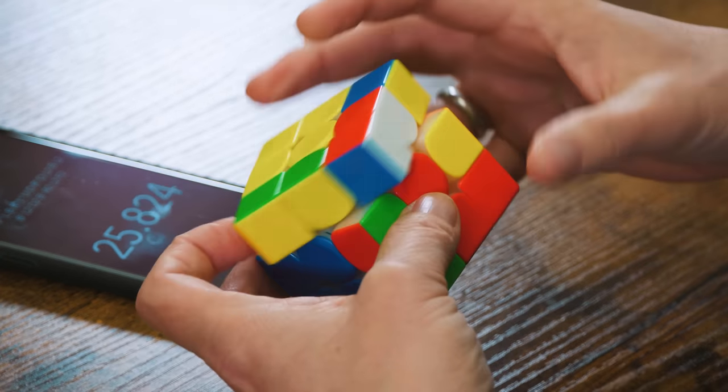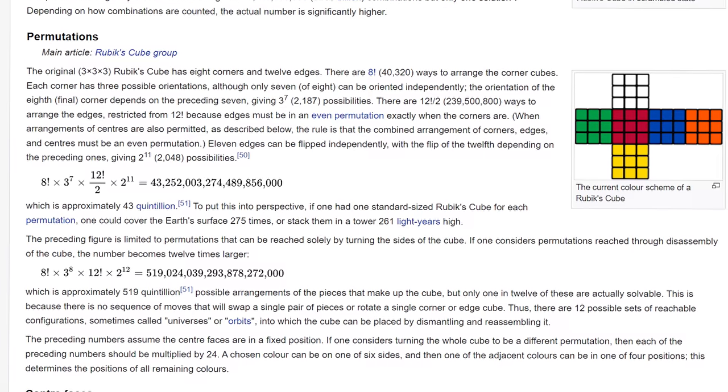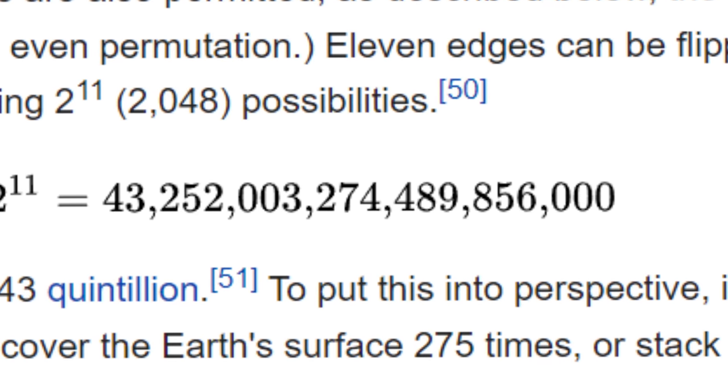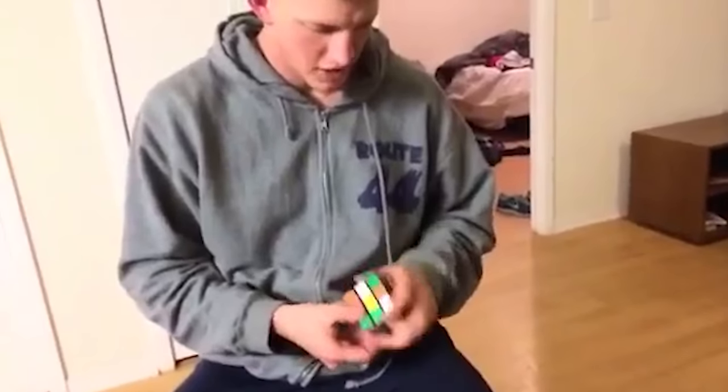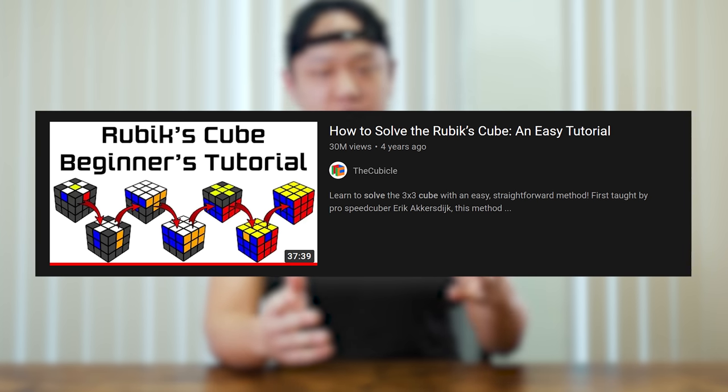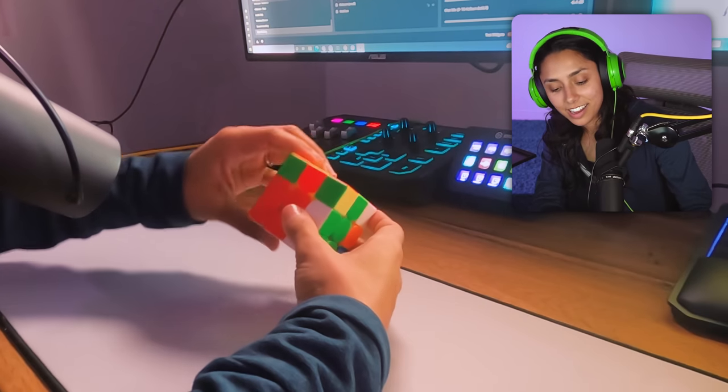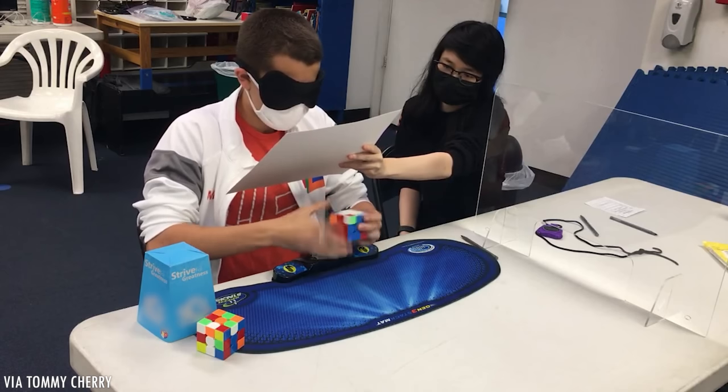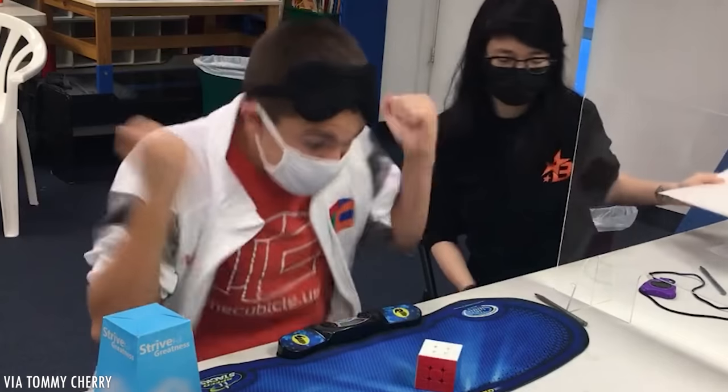The Rubik's Cube is one of the most iconic puzzles in the world. With over 43 quintillion unique combinations, many people find it impossible just after a few minutes of trying. However, solving this puzzle is far from impossible. In fact, there are a variety of ways to solve it, ranging from intuitive methods to extremely memory-based algorithmic solutions. Everyone who solves the cube does it in their own unique way.